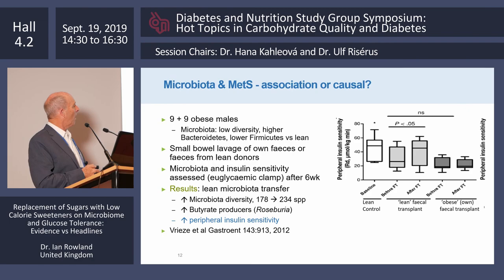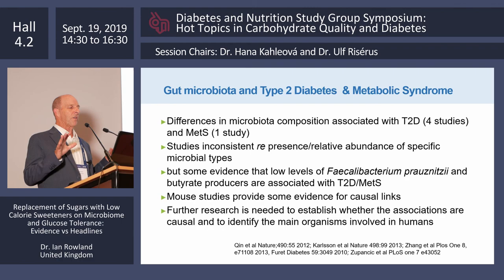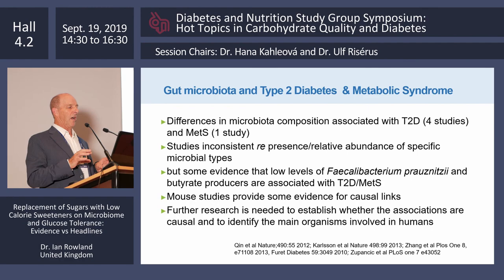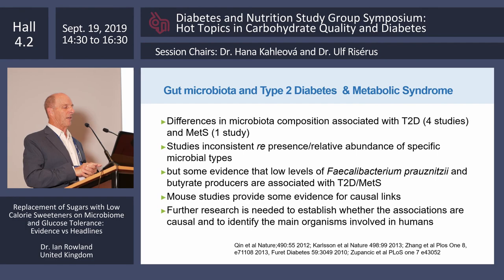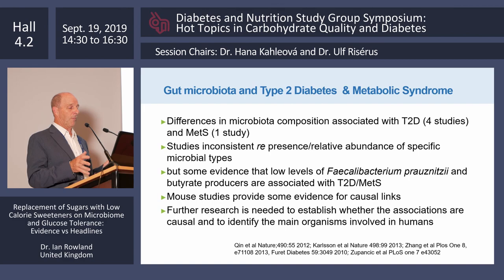To summarize: there are differences in microbiota composition associated with type 2 diabetes and metabolic syndrome, but studies are inconsistent regarding the presence and relative abundance of specific microbial types. There is some evidence that low levels of Faecalibacterium prausnitzii and butyrate producers are associated with type 2 diabetes and metabolic syndrome. Some mouse studies provide evidence for causal links, but much more research is needed to establish whether observed associations are causal and to better characterize the key organisms involved in humans.